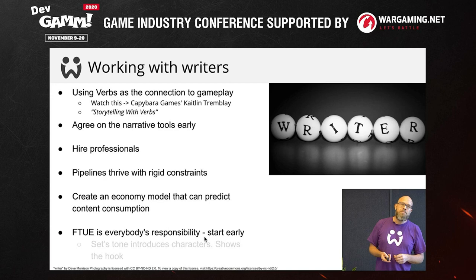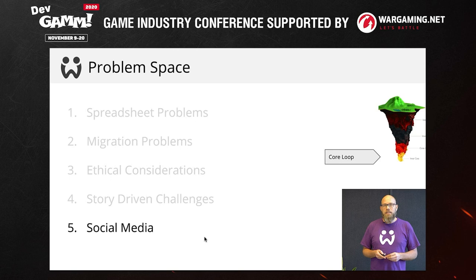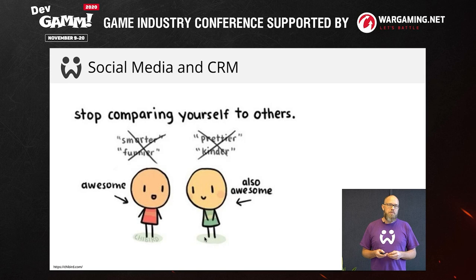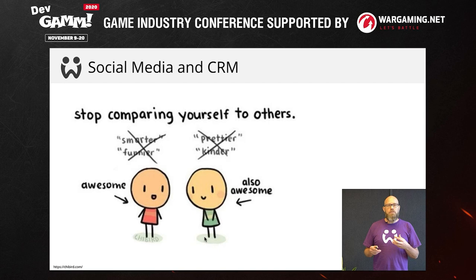Final problem space: social media. People are going to compare screenshots with each other and they're going to complain about it on Facebook. Part of this is just a band-aid you've got to rip off — you should have a plan on how you're going to deal with this. But if you're really personalizing your game, there are things you can do to make sure their two experiences are not very comparable. It depends on your core loop and your UI — just keep this in mind as you're personalizing. What happens when two players compare their screenshots? Will somebody feel upset?